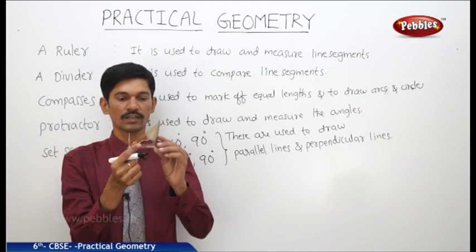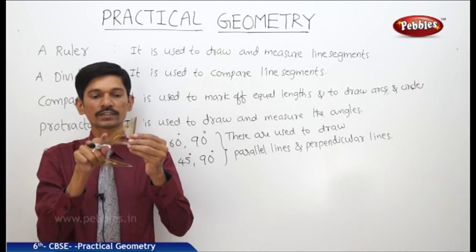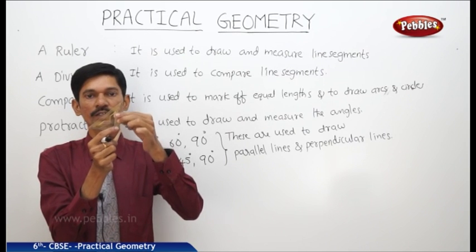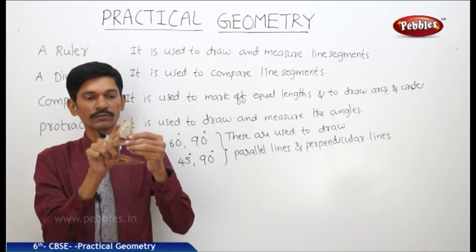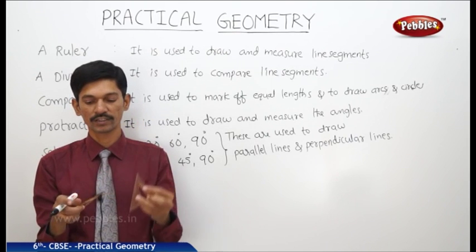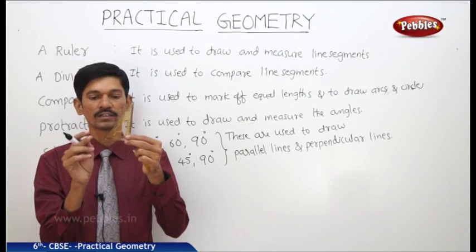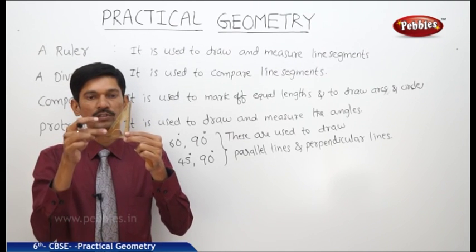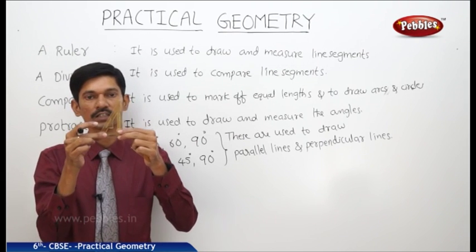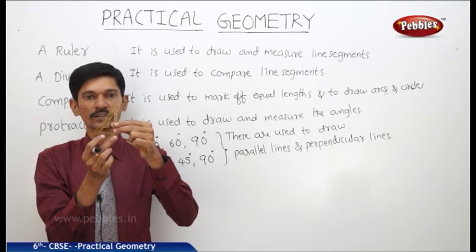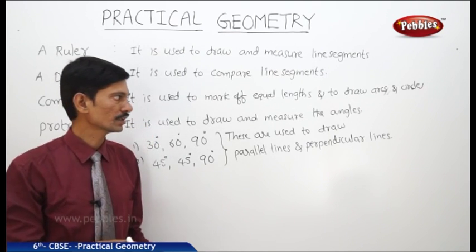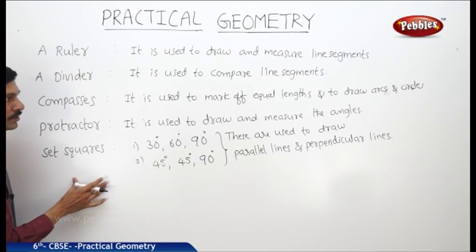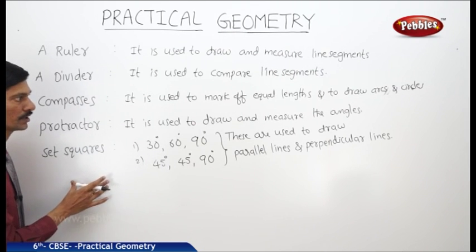This set square has two equal angles of 45 degrees and 45 degrees, and the other angle being a right angle. The other is 30-60-90 set square. These are the instruments which you have in the geometry instrument box. While drawing geometrical shapes, we use these instruments.